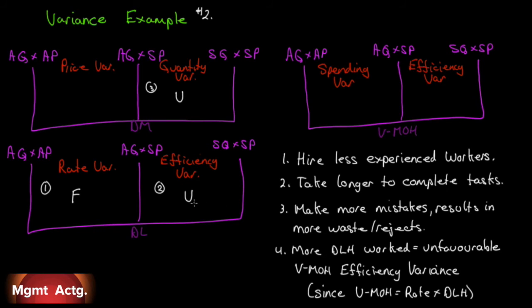Further, they make more mistakes, which results in more waste and more rejects. So you will have an unfavorable quantity variance. Going back to the second one, the unfavorable efficiency variance, more direct labor hours worked equals an unfavorable manufacturing overhead efficiency variance, since, of course, it's part of calculating the total. So number four over here, you will have an unfavorable efficiency variance.